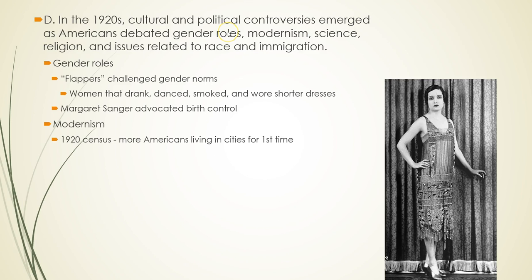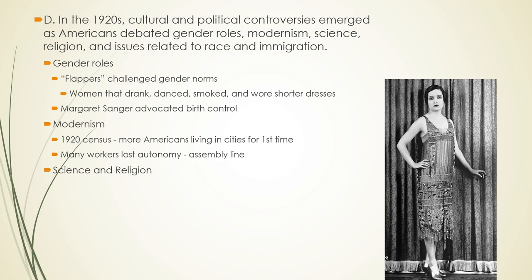Modernism is another controversy of the era. More Americans were living in cities for the first time in the country's history than in suburban or rural areas. Many Americans, however, were losing their autonomy — becoming cogs in the wheel of industrial society. Modernism is a double-edged sword: Americans had more creature comforts than ever — radios, electricity, refrigerators — but at the same time, they had less time and energy to enjoy these things. Technology has created this ongoing tension.